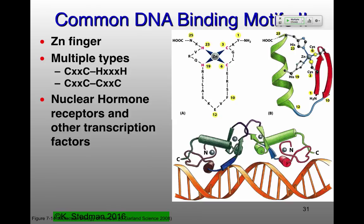Zinc fingers are very common in eukaryotic systems, found rarely in bacteria and sometimes in archaea. We're going to spend quite a long time talking about nuclear hormone receptors which have specific zinc finger interactions. Zinc fingers can often form multimers — not just dimers, but three, four, or five zinc fingers put together, giving high specificity.